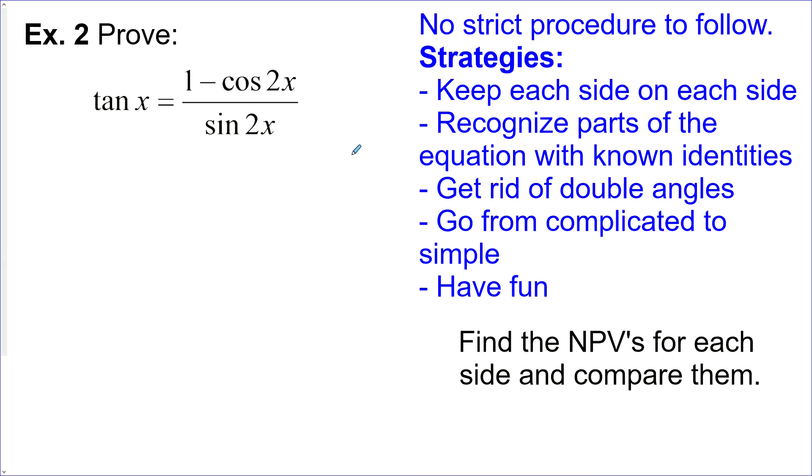When we are proving identities, there's no strict procedure to follow because each question is different. But here are some strategies. Keep each side on each side. No crossing over. In this case, no multiplying by sin 2x on both sides to get rid of it in the denominator. Keep it on the side that it started on.